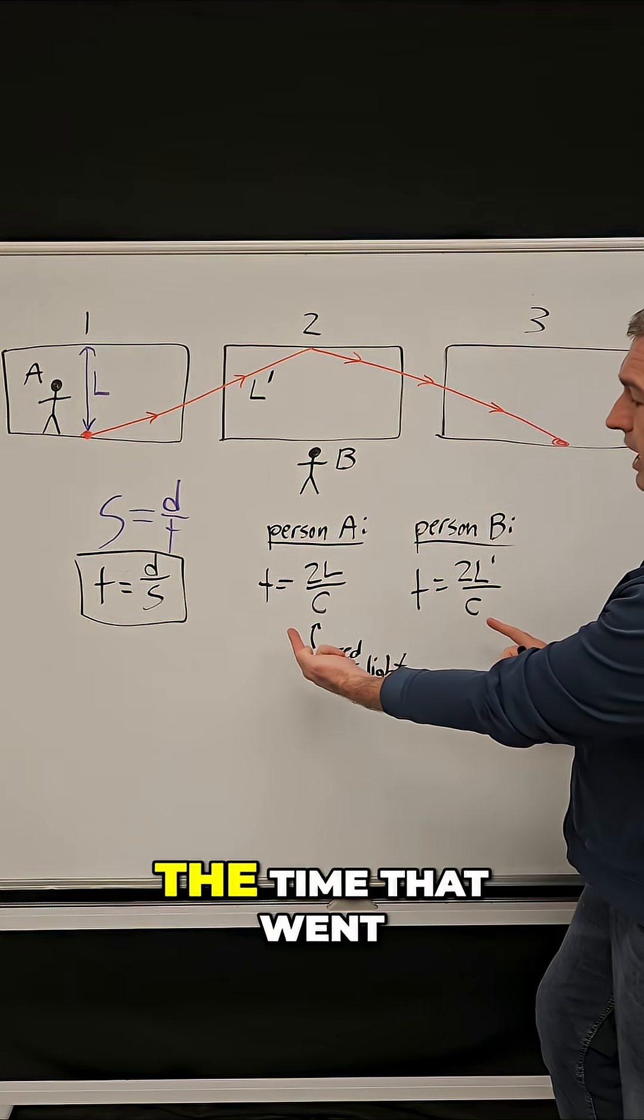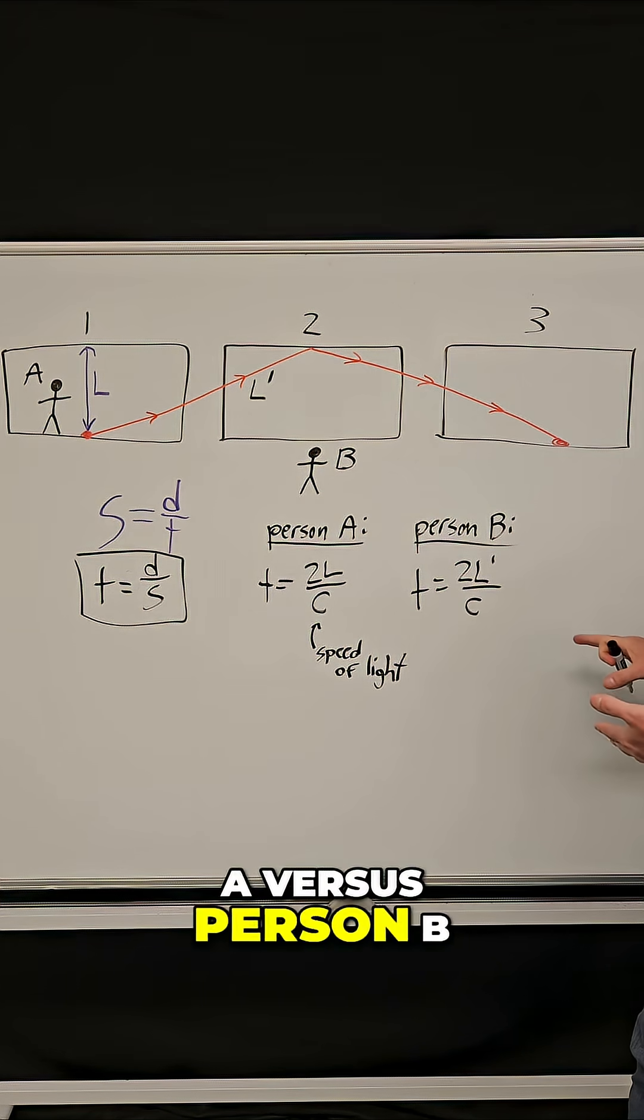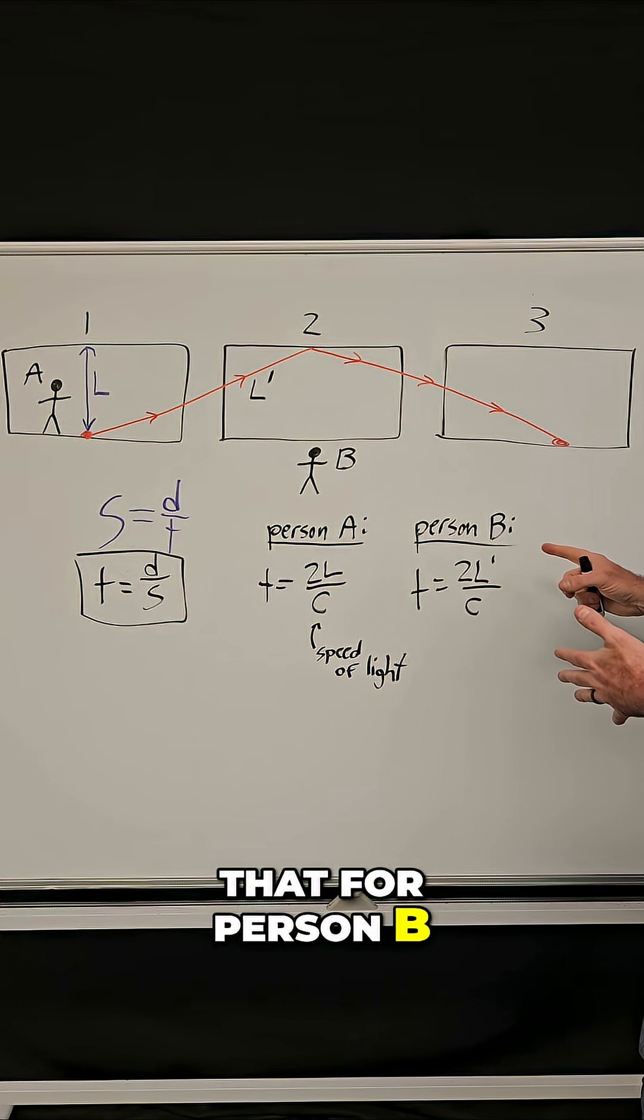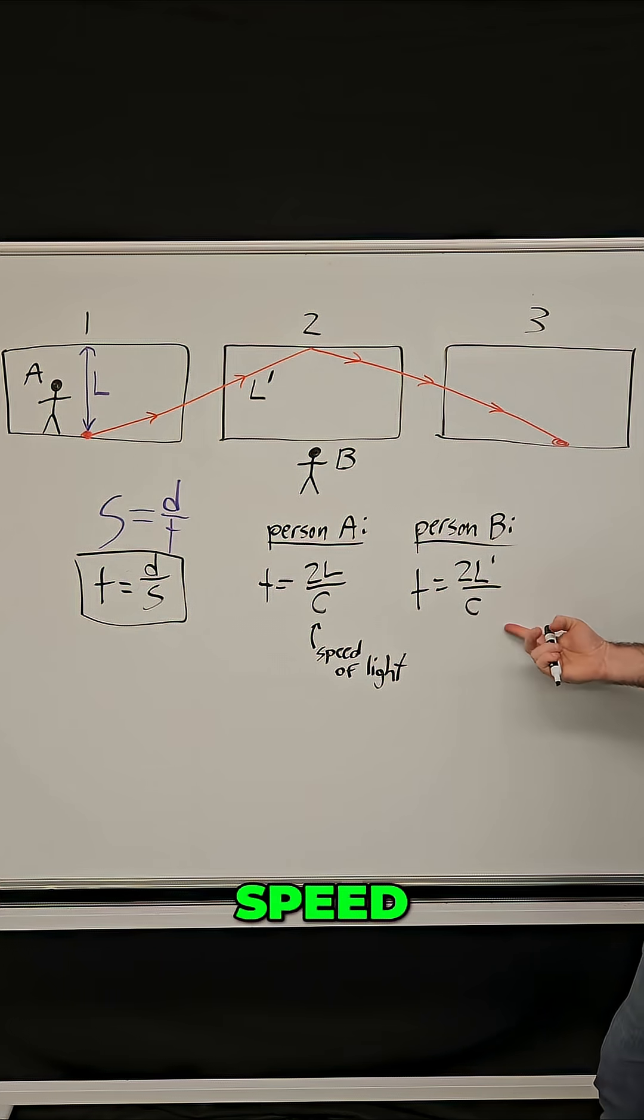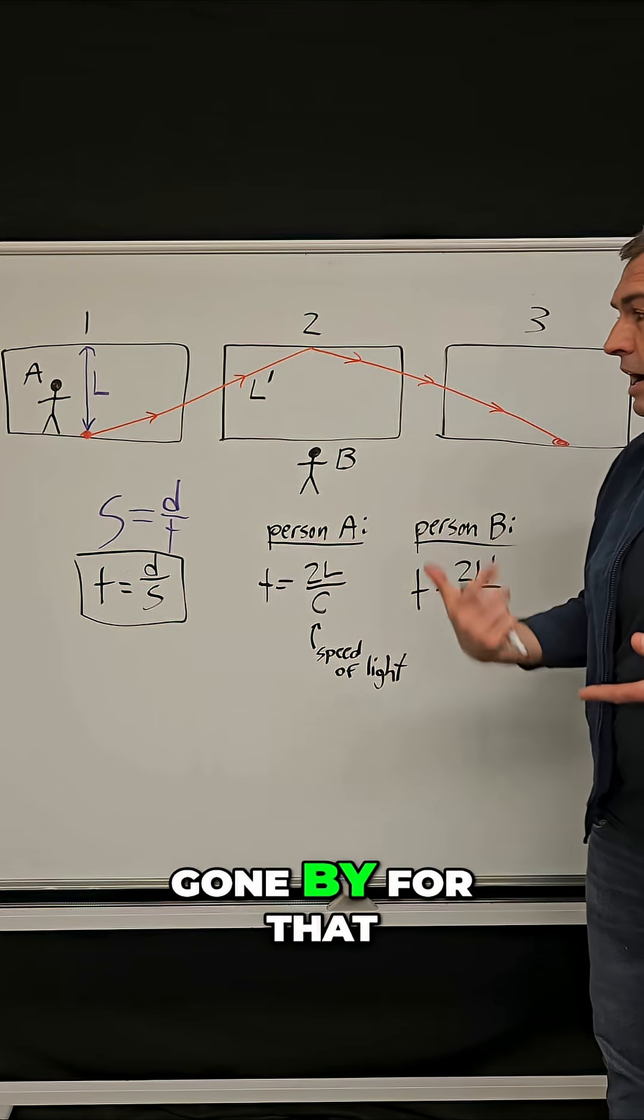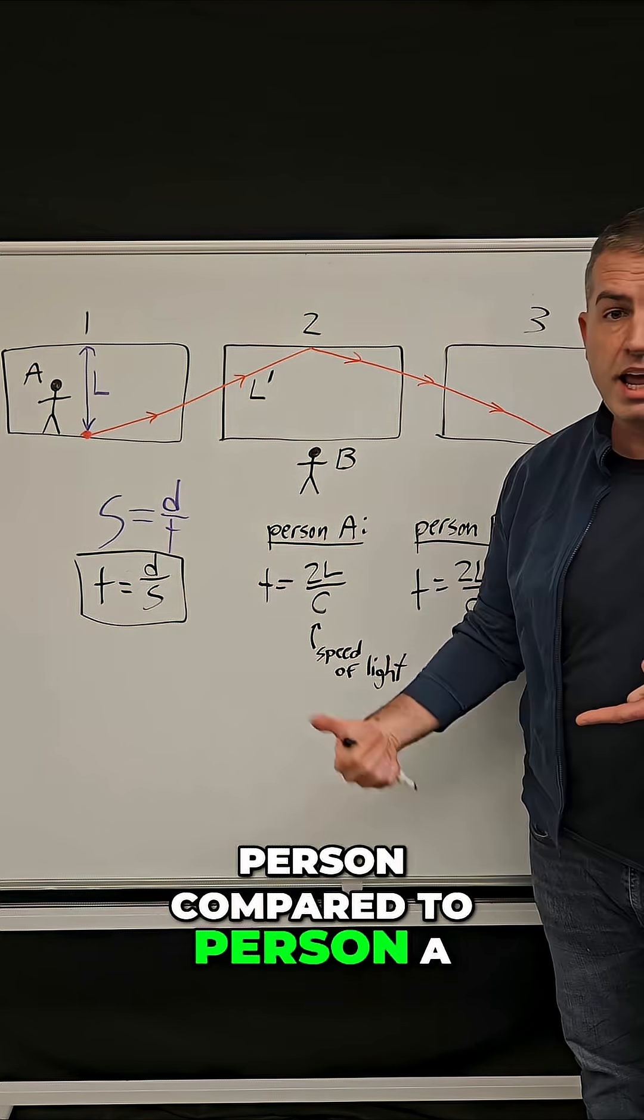And so when you look at the time that went by for person A versus person B, it's very clear that for person B, because it traveled a much greater distance at the same speed, much more time must have gone by for that person compared to person A.